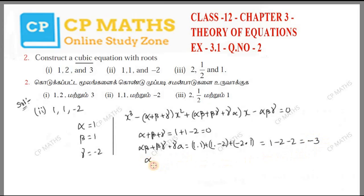Now for the sum of pairs: alpha beta plus beta gamma plus gamma alpha. That gives 1 into 1 plus 1 into minus 2 plus minus 2 into 1, which is 1 minus 2 minus 2, so minus 3.